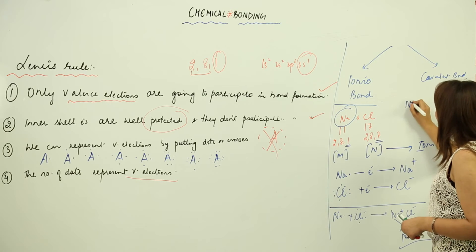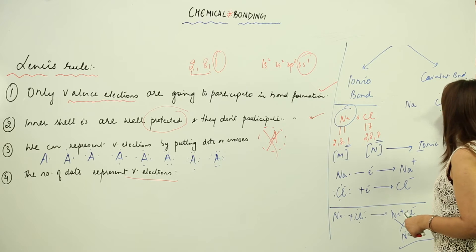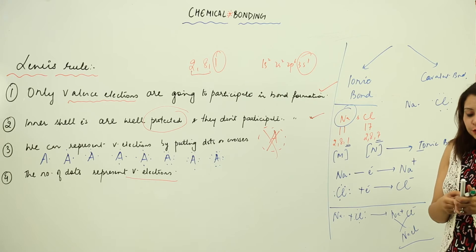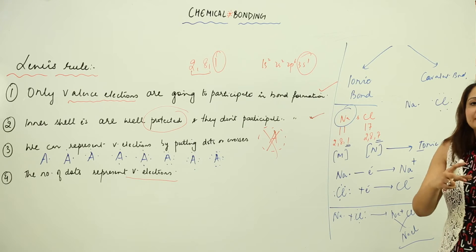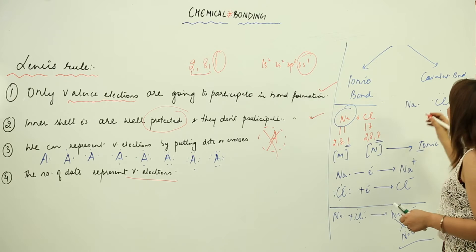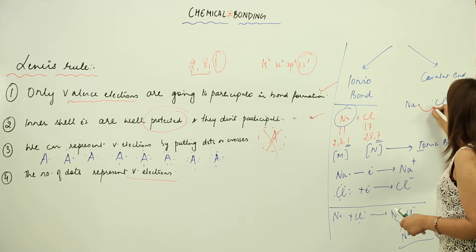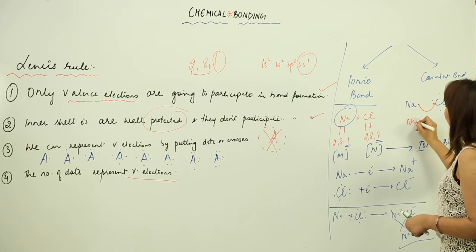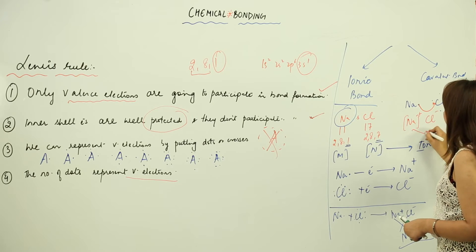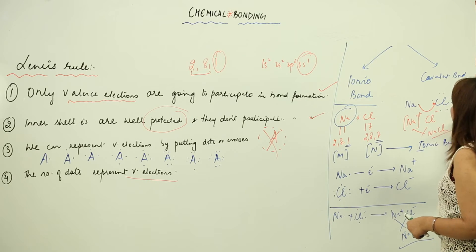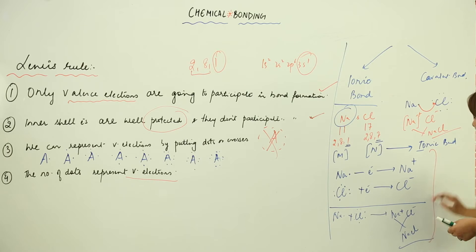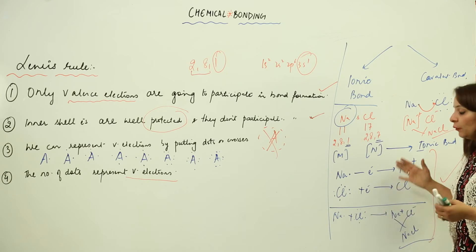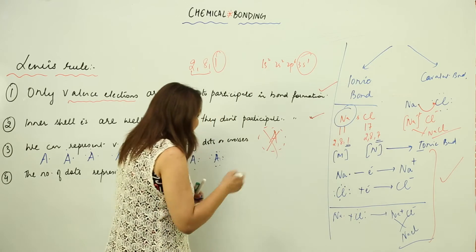Another method to represent this: draw sodium with one dot and chlorine with seven dots, then put an arrow to show which atom donates an electron and which gains it. Since the metal donates, this electron is given by sodium to chlorine. As a result, sodium becomes positive, chlorine becomes negative, and crisscrossing gives NaCl again. This method is the best one because it gives full detail of the bond formation.